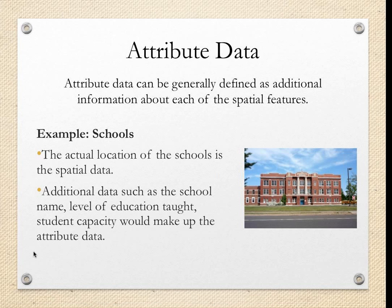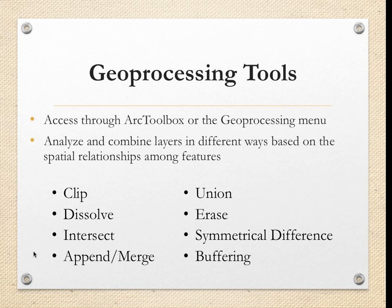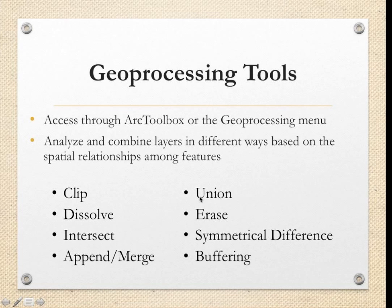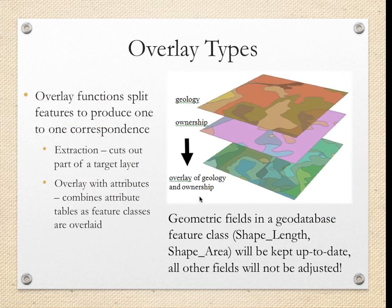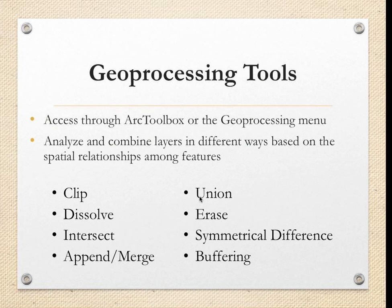There are two main types of data: vector and raster. Vector data is displayed as points, lines, and polygons — things like streets, customers, trees, and schools. Raster data is cell-based data such as aerial imagery and digital elevation models — things like elevation and greenhouse gas emissions. Behind each of these spatial features is attribute data, which is additional information about the spatial features. For example, the location of a school is spatial data, but the school's name, level of education taught, student population demographics, and capacity would be considered attribute data.